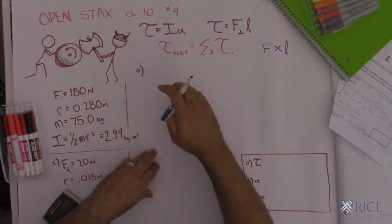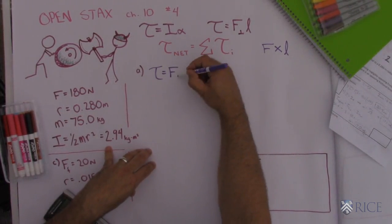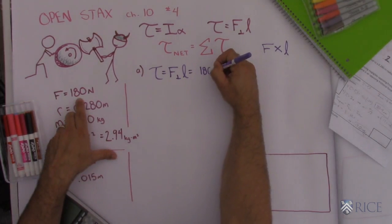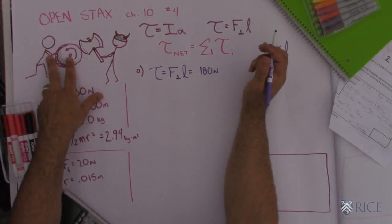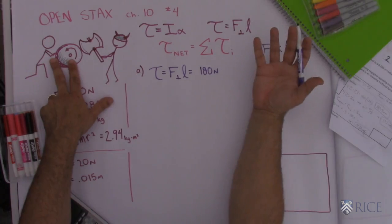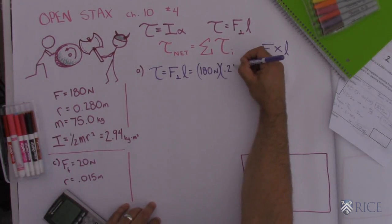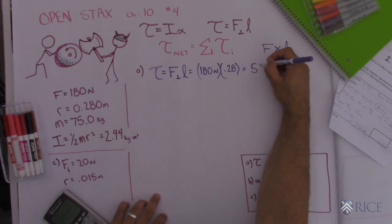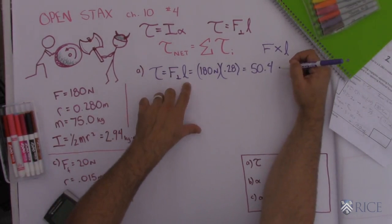So to find the torque for part A, I'm going to find the amount of force that's applied perpendicular to the lever arm. And they told us that force was 180 Newtons. And here the lever arm is how far the force is applied away from the center, which is the radius. So I have to take 180 Newtons times a radius of 0.28. And that gives me a net torque of 50.4. And the unit for torque is Newton meters.